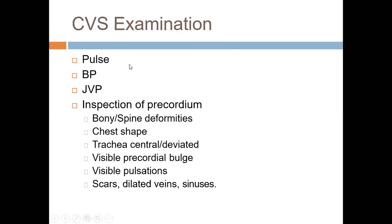Starting the cardiovascular examination, the most important initial step is the pulse, followed by blood pressure, JVP, and inspection of the precordium. JVP is more important in adults than pediatric patients. Blood pressure is almost always important. Inspection of the precordium should look for deformity, chest shape, tracheal deviation, visible precordial pulse, visible pulsations anywhere in the chest, surgical scars from previous operations, dilated veins, and sinuses.